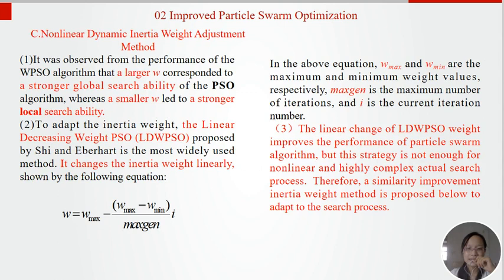It was observed from the performance of the WPSO algorithm that a large omega corresponds to a strong global search ability of the PSO algorithm, whereas a small omega leads to a strong local search ability. The linear decreasing weight PSO (LDW-PSO) proposed by Shi changes the inertial weight linearly. The linear change of LDW-PSO weight improves the performance of Particle Swarm algorithm. But this strategy is not enough for nonlinear and highly complex optimization processes. Therefore, a similarity-based improved inertial weight method is proposed below to adapt to the search process.